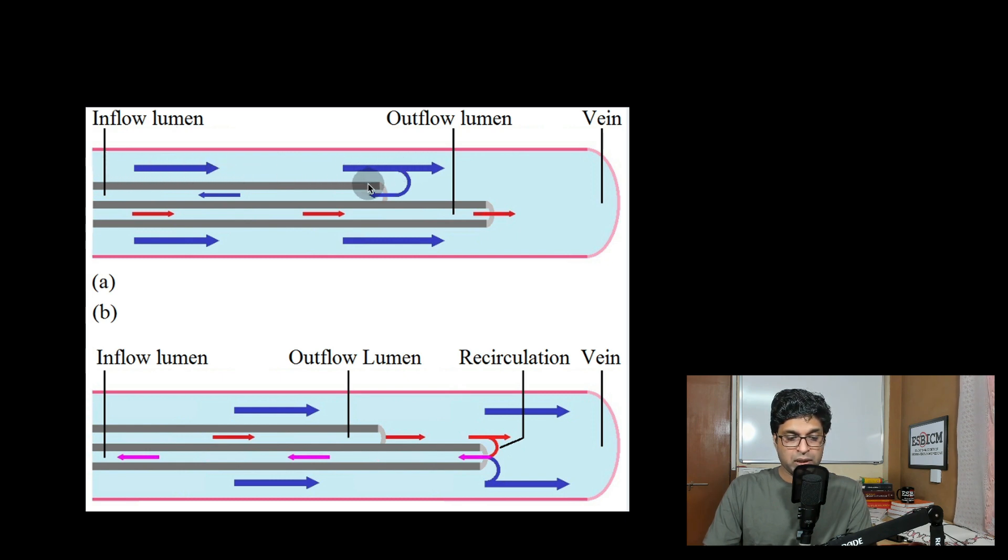The vein is draining to the heart and your catheter is also placed in this direction. Now this blood is going here and the proximal port was the arterial port, the red port from which we need to take blood. This is normal condition.